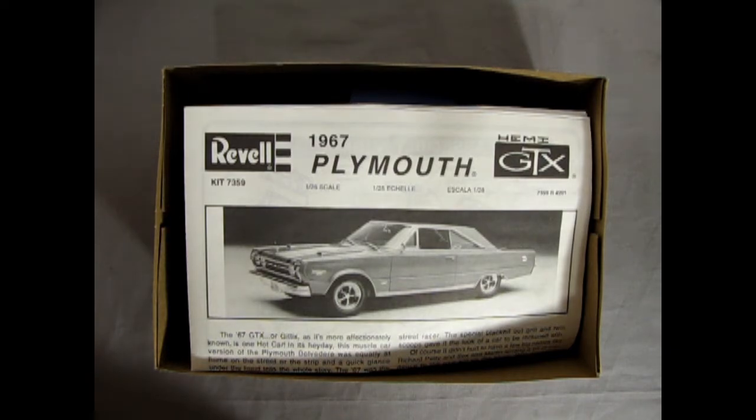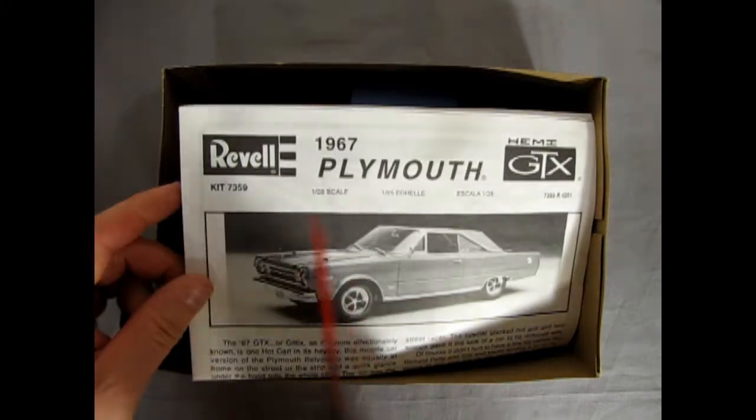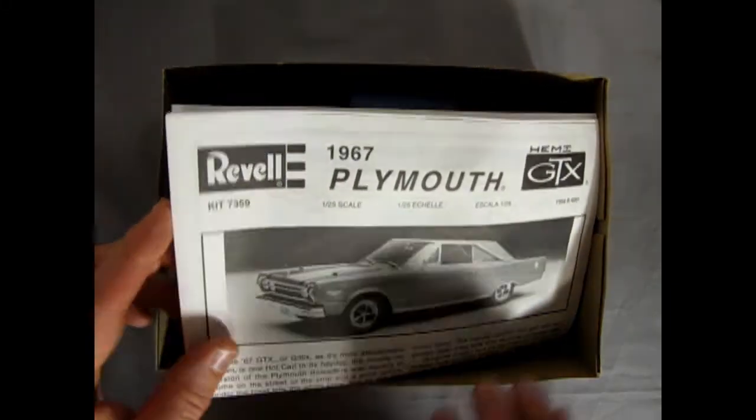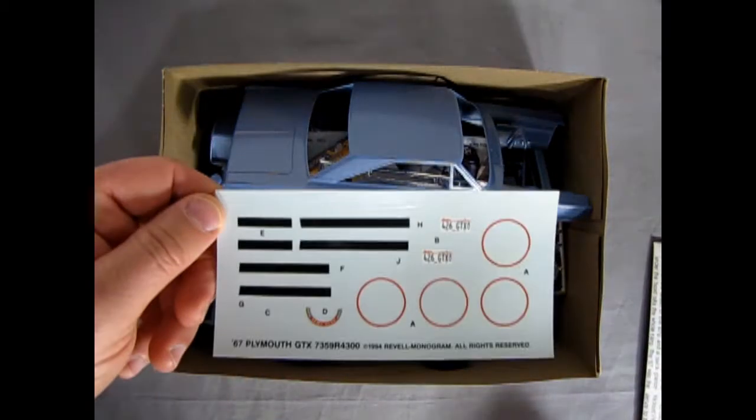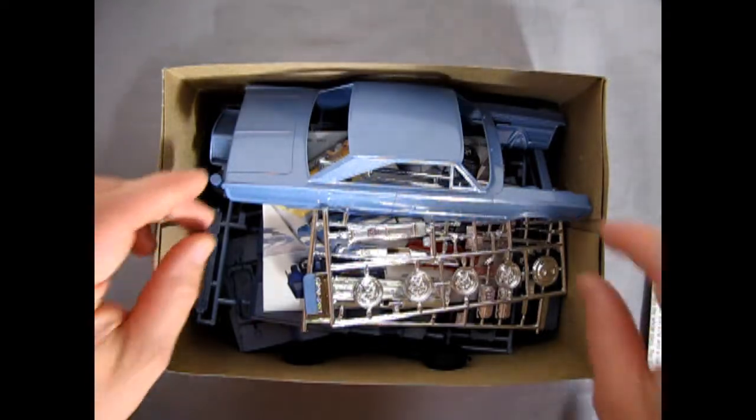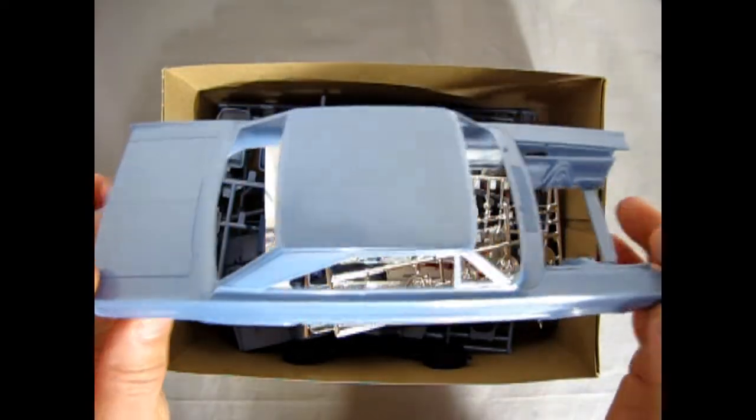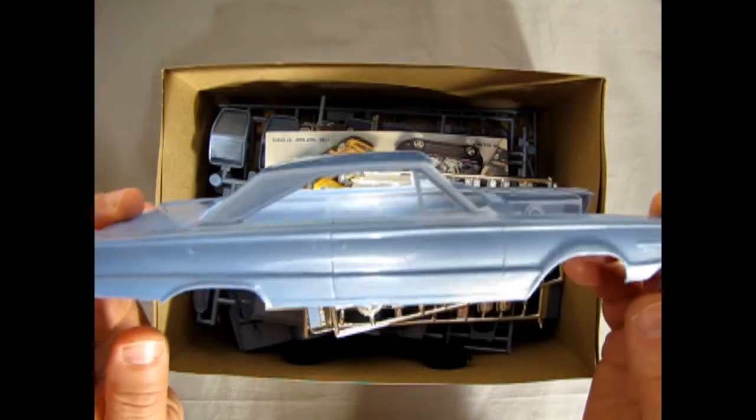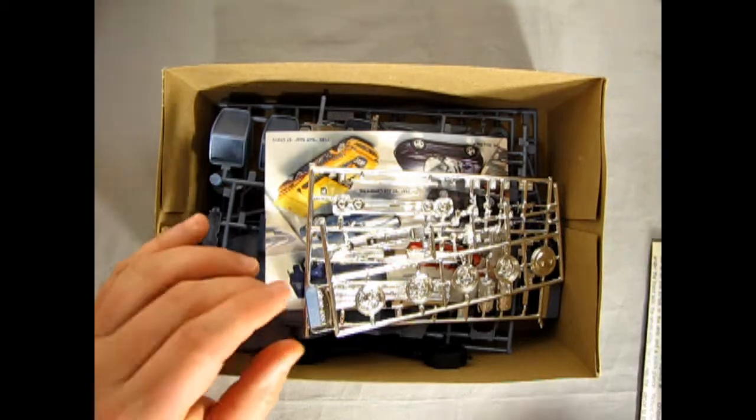So here we have our instruction sheet. And this time around it did not write on the top of this where I got it and whatnot. The decals down below. Then we've got the body. Look at this nice metallic blue this is molded in. Really pretty cool. Pretty color. So we'll take a look at that in a minute.